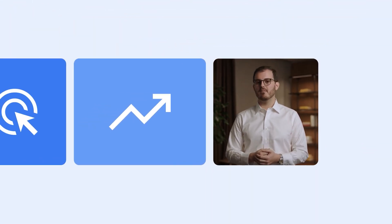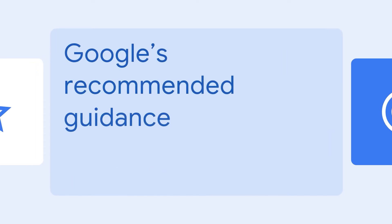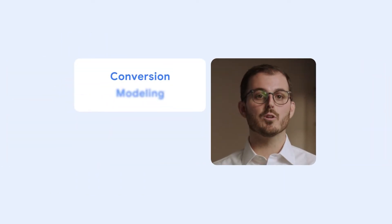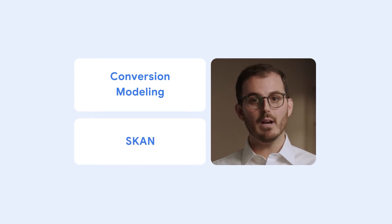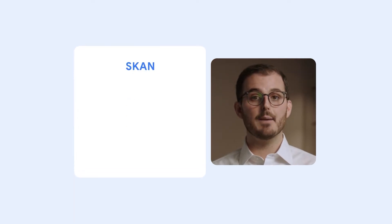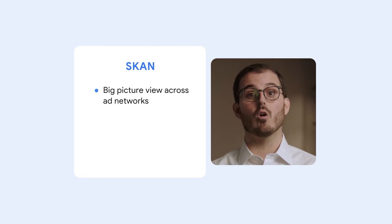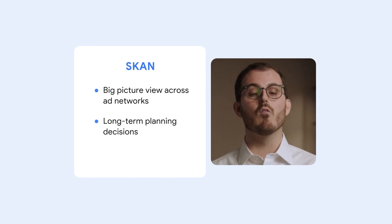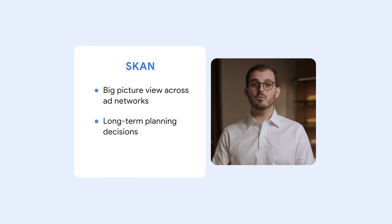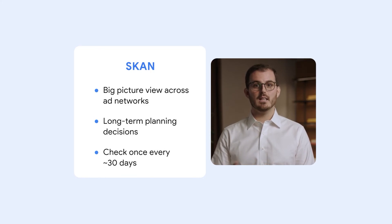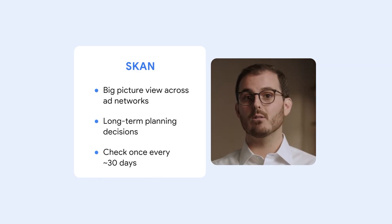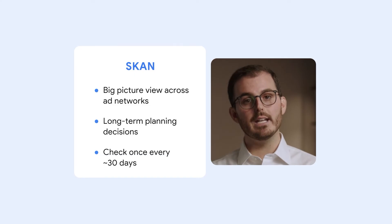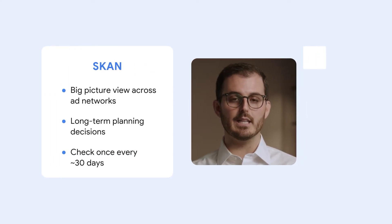A third and final discrepancy source can be the differences between how each framework defines a re-download. So how do you choose which measurement framework to use? We support Google conversion modeling and SKAN, and we recommend that advertisers understand how to think about each tool when making a business decision. SKAN can enable a big-picture view of how your campaigns perform across numerous ad networks. It's well-suited for long-term decisions, like planning your overall ad budget across partners. Since SKAN reports do take time to process given conversion windows, timers, and other variables, we recommend checking them about once every 30 days.